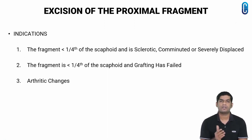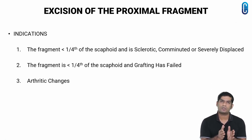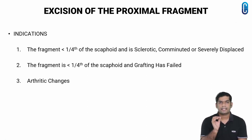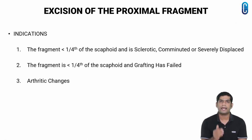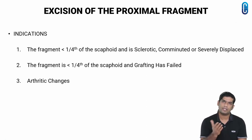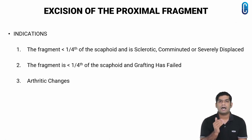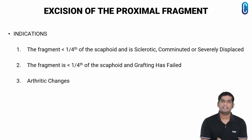The indications for excision of the proximal fragment are: first, the fragment is one-fourth or less of the scaphoid and is sclerotic, comminuted, or severely displaced. A comminuted fragment is usually excised early to prevent arthritic changes, and a severely displaced fragment should also be excised early if it cannot be accurately replaced by manipulation. Second, the fragment is one-fourth or less of the scaphoid and grafting has failed. Third, arthritic changes are present in the region of the radial styloid, in which case styloidectomy is indicated in conjunction with excision of the proximal fragment.